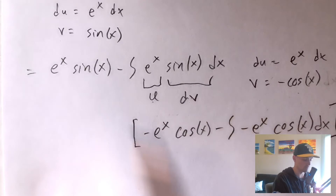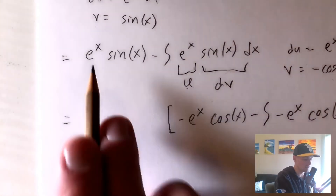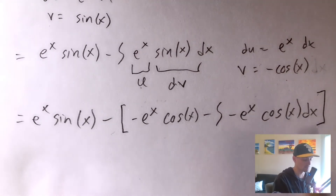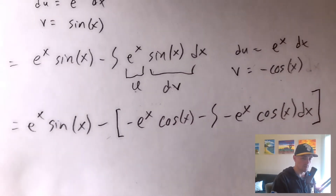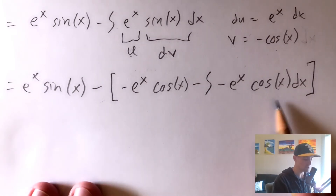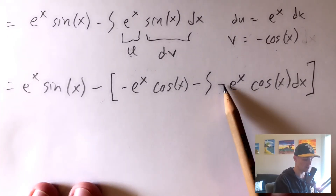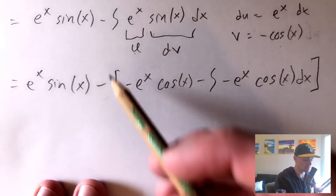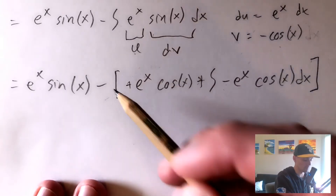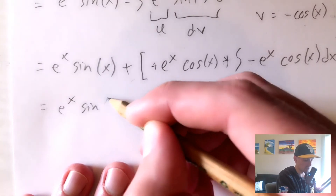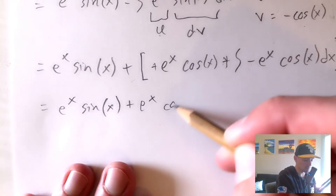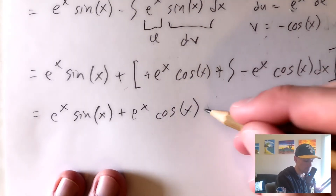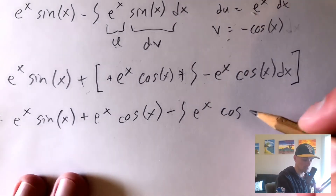Keep in mind that this whole thing is the integration by parts formula applied to just that inner integral, but we also have all the earlier stuff to carry forward. So we bring down e to the x sine x, and then we subtract this whole bracketed expression. Distributing the negative sign makes both terms positive, so we get e to the x sine x plus e to the x cosine x, and then we can pull the negative sign out of the integral — minus the integral of e to the x cosine x dx.